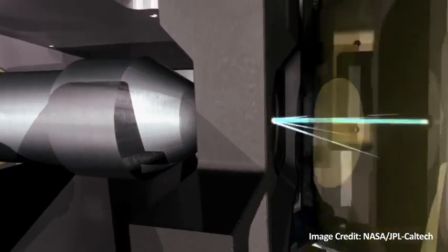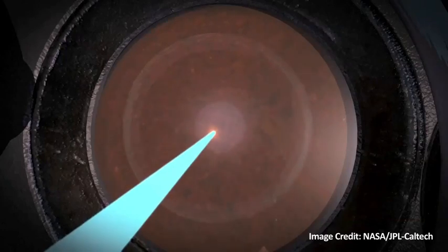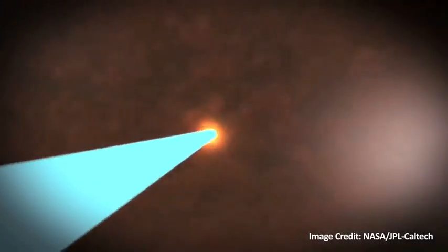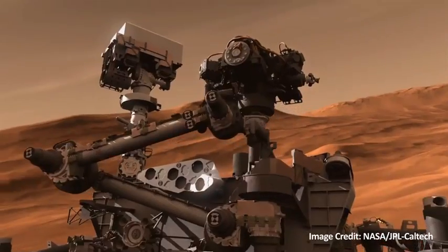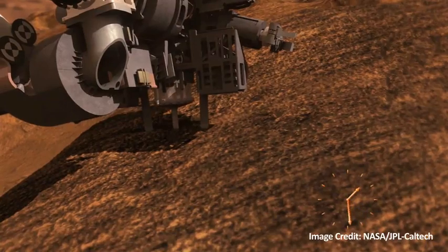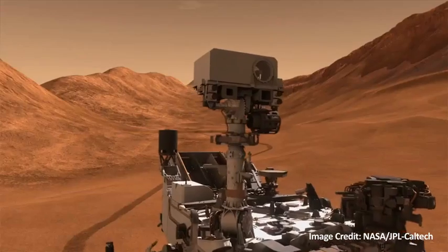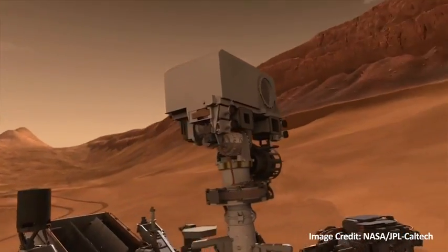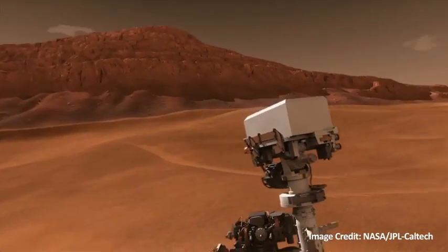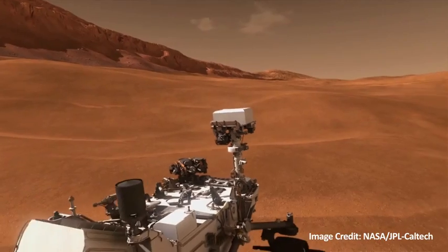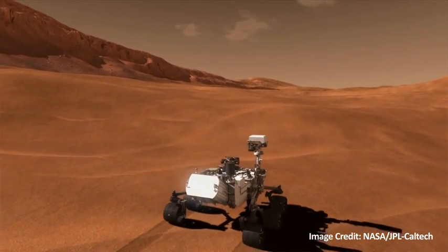And on it, it irradiates the surface of Mars with alpha particles, blasting them into the rock. Those alpha particles excite X-ray fluorescence from the rock, which tells us the elements that the rock is made of. And those elements will tell us if that rock could be a habitat for life.